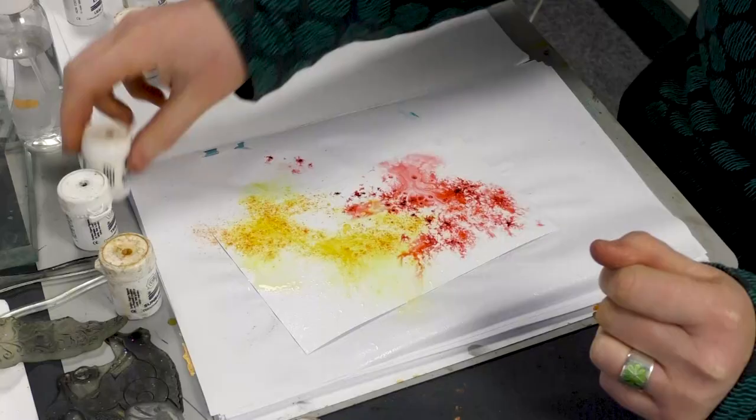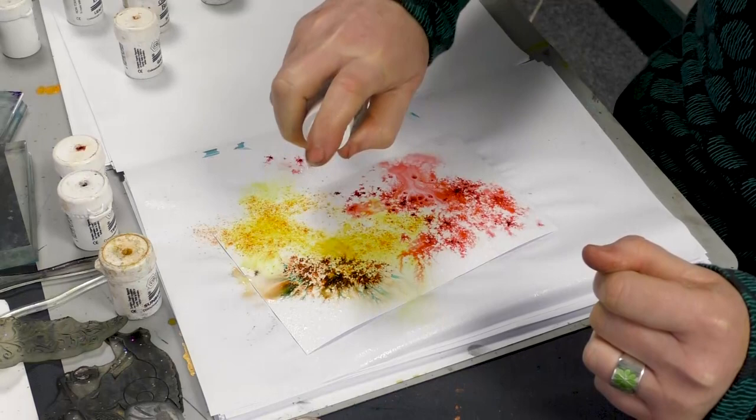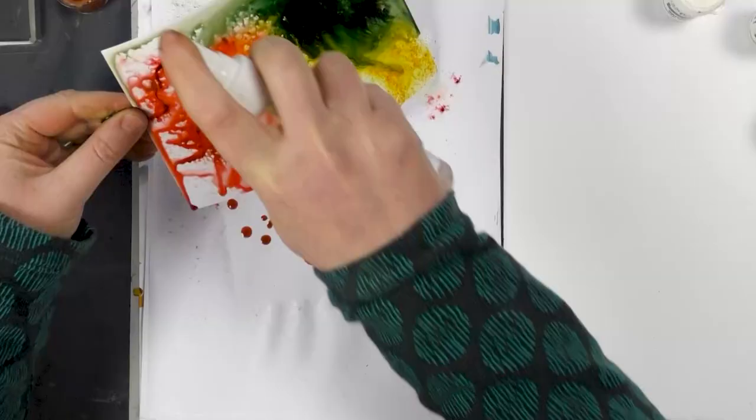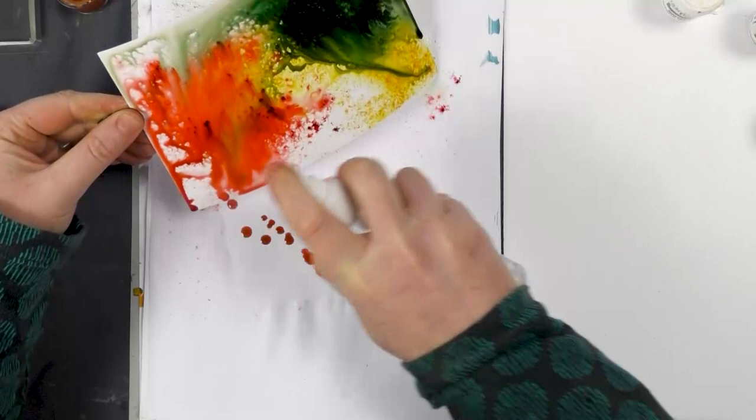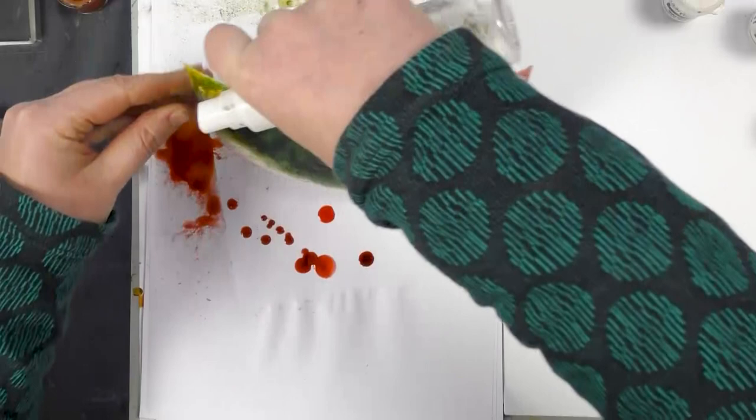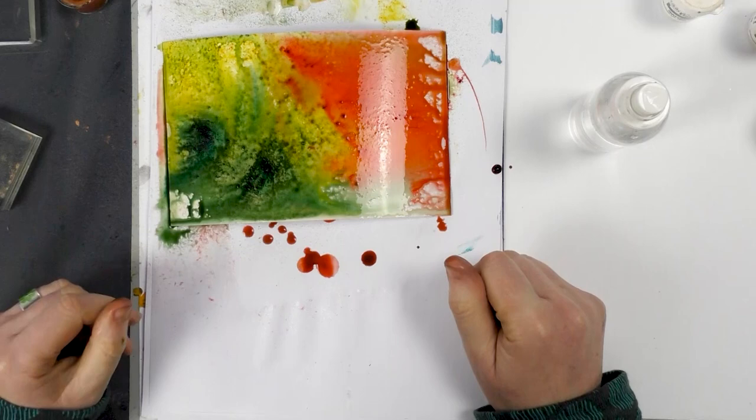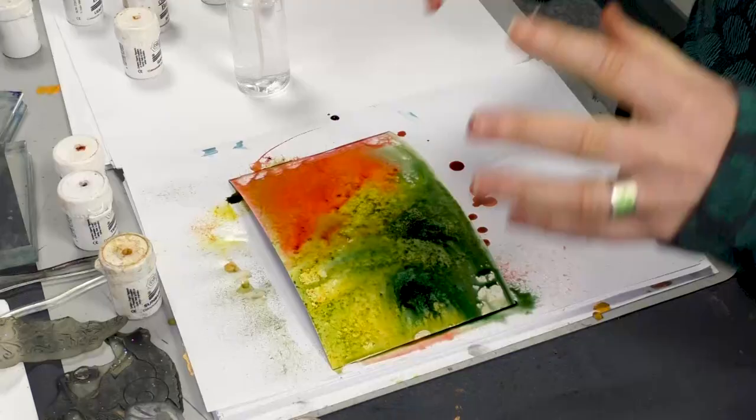Okay so now I'm going to just carry on spritzing with water and simply move the card about. So I would now just leave that to the side for it to dry and then go back to it obviously to stamp onto. So you could create your backgrounds first, create a number of different backgrounds and then the following day you can use those to stamp onto.